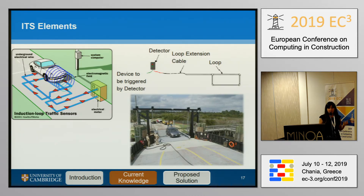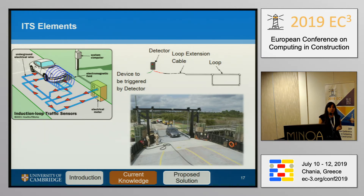Regarding ITS elements, we have loop detectors and RAM detectors. When the inspector goes on the road, what they see is only a traffic light, because this is how these loop and RAM detectors work. When there are issues with this kind of asset, the only thing the inspector might see is that the traffic light doesn't work or has some issues.